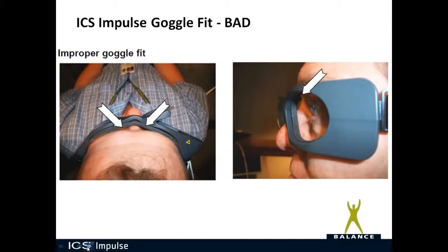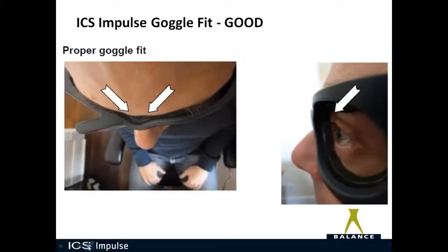Let's look at goggle fit again. If you look where the arrows are pointing, you see there are gaps between the patient's face and the foam cushion — that's a bad goggle fit. If the goggles fit like this, you're at risk that they will slip during head impulse testing. You can try removing the face cushion and using the goggles without it to see if they adhere more appropriately. In my experience, it's very rare to find a patient where the foam cushion fits this poorly. Here is an example of a proper goggle fit — no gaps from the side or top, and the face cushion is adhering to the patient's face, which is what we see most of the time.